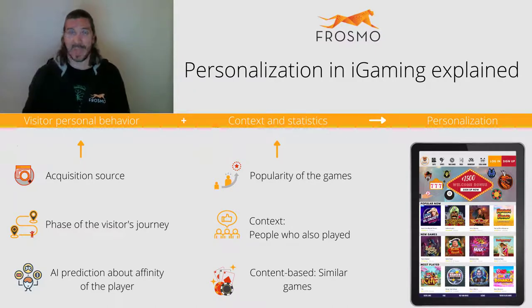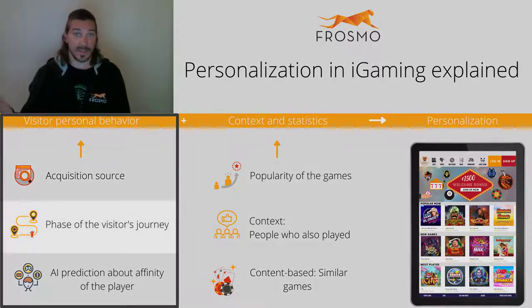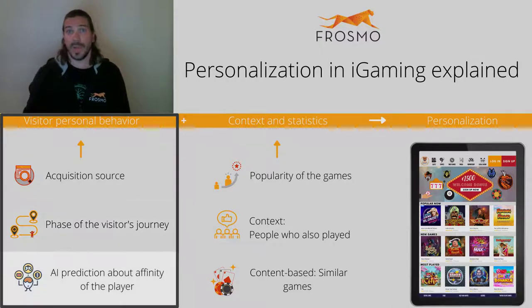Behavior examples can be the acquisition source and reason facing a customer journey, like what happens after the first deposit is done, or it can be the Frosmo AI prediction about the visitor affinity.